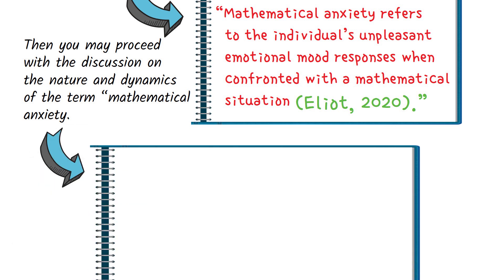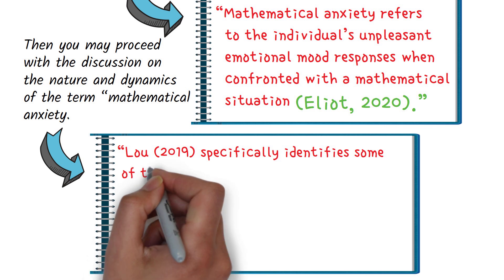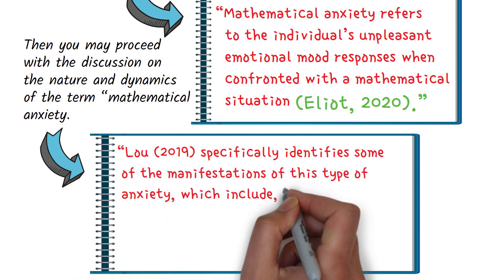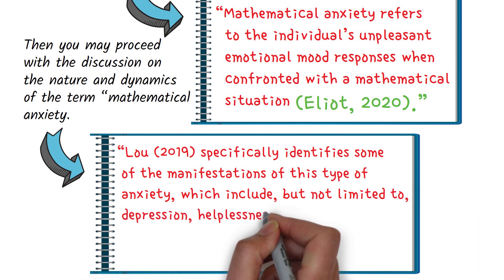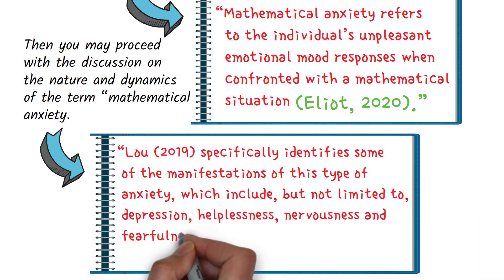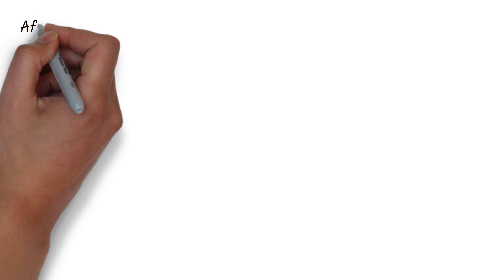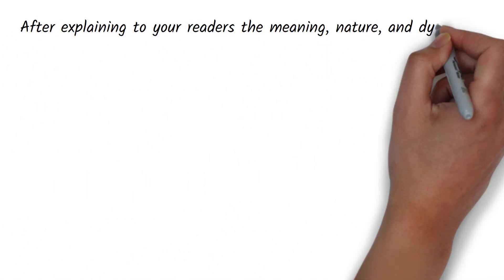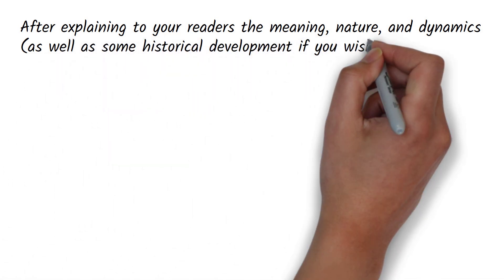You may say: 'Liu specifically identifies some of the manifestations of this type of anxiety, which include, but are not limited to, depression, helplessness, nervousness, and fearfulness in doing mathematical and numerical tasks.' After explaining to your readers the meaning, nature, and dynamics — as well as some historical development, if you wish — of the term mathematical anxiety, you may now proceed to showing the problem or gap of the study.